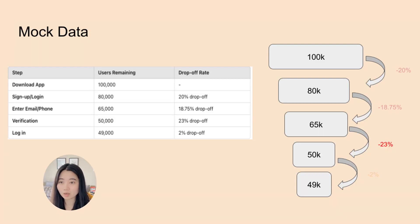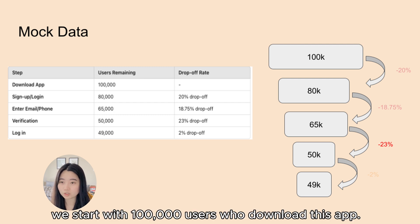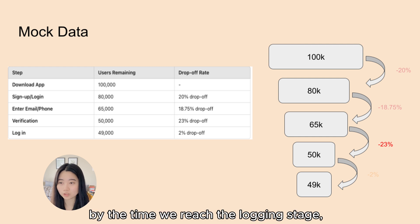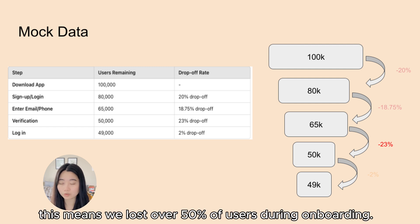Here's some log data for our funnel. We start with 100,000 users who download the app. By the time we reach the login stage, only 49,000 users remain. This means we lost over 50% of users during onboarding.